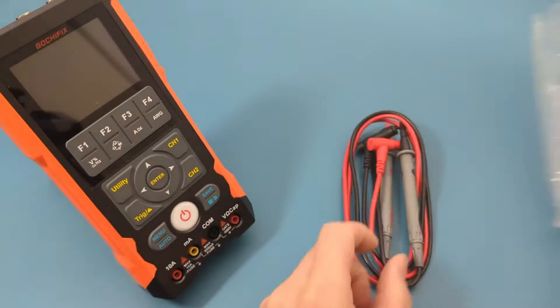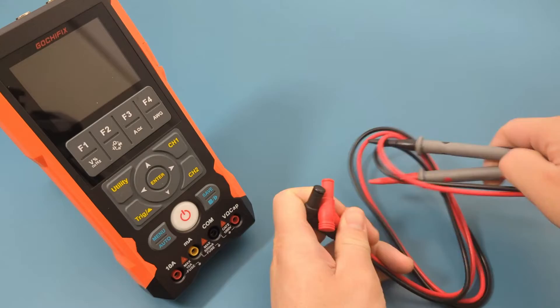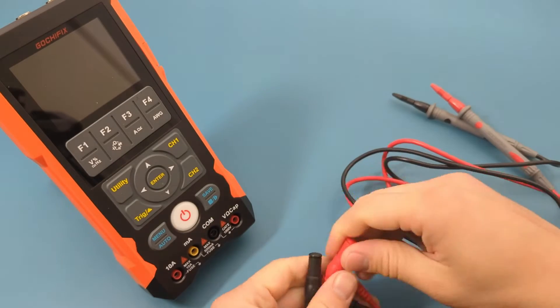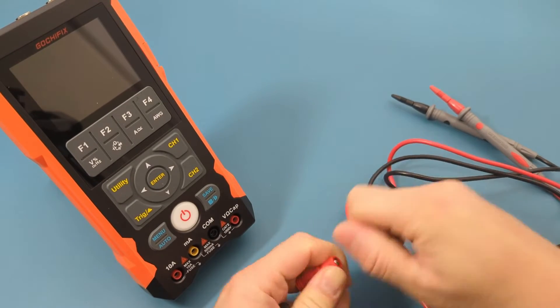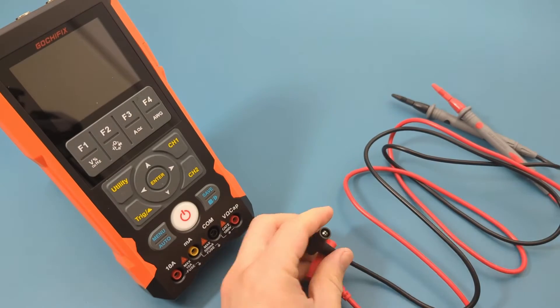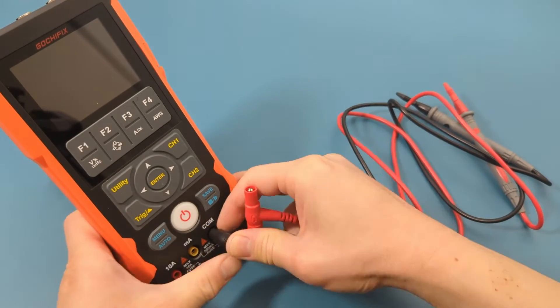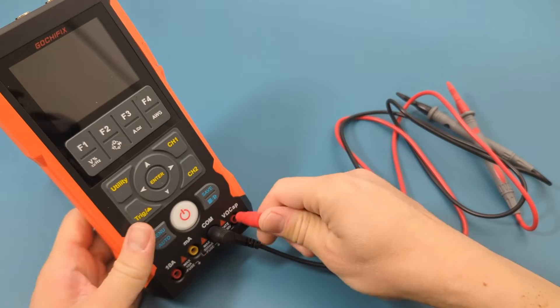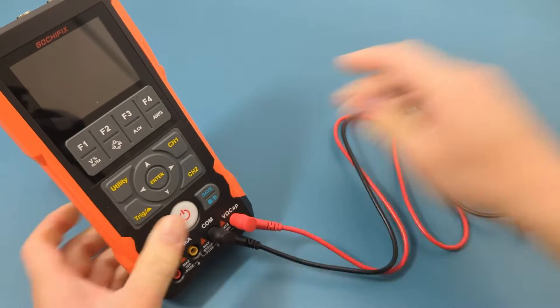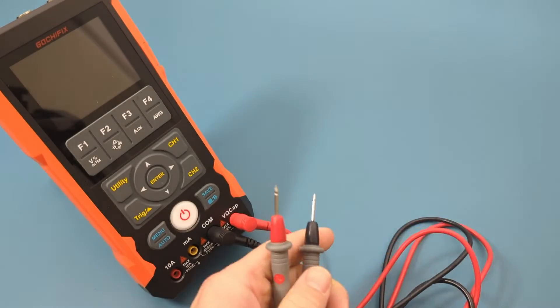This multimeter has two probes. The red probe typically connects to the positive terminal while the black probe is intended for the negative terminal. Connect the black probe to the COM port. Connect the red probe to the voltage resistance port. Press the power button to turn on the multimeter.